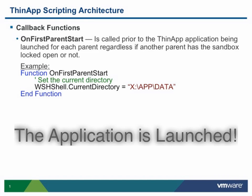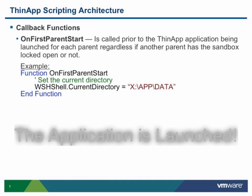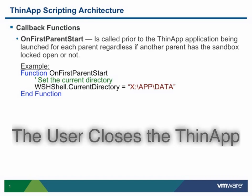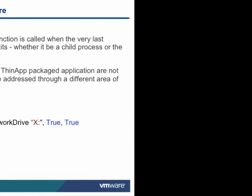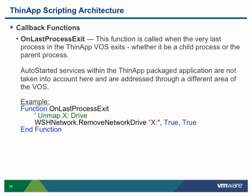Up to this point we have covered ThinApp scripted callback functions which execute prior to the ThinApp packaged application launching. We now move into the callback functions which execute upon close of ThinApp packaged applications. The first of these is OnFirstParentExit. This callback function is executed for each parent or entry point upon close of the entry point parent process, regardless of any child process which may have been spawned. The example code shown for this callback function is removing database lock files if left behind. The last callback function is OnLastProcessExit, which executes once only after all parent and child processes are closed — whether foreground or background. This does not include any auto-started services, as these are handled through a different subroutine within the ThinApp virtual operating system.